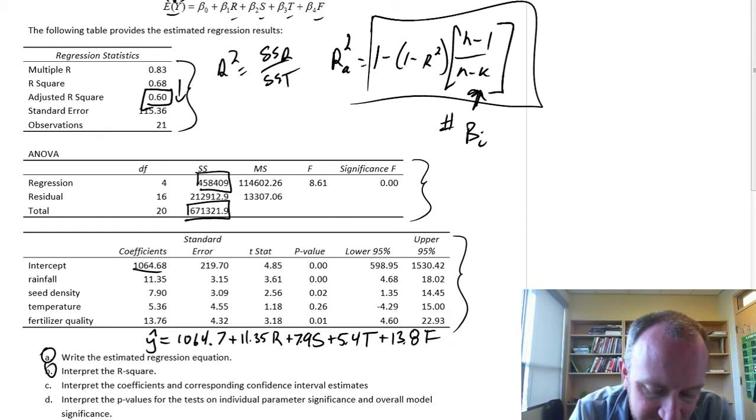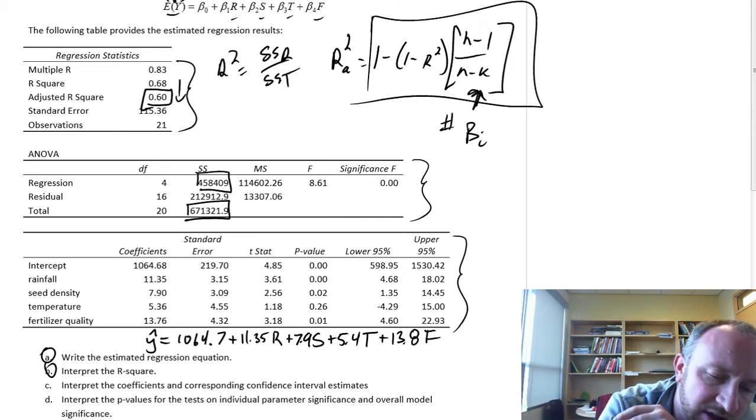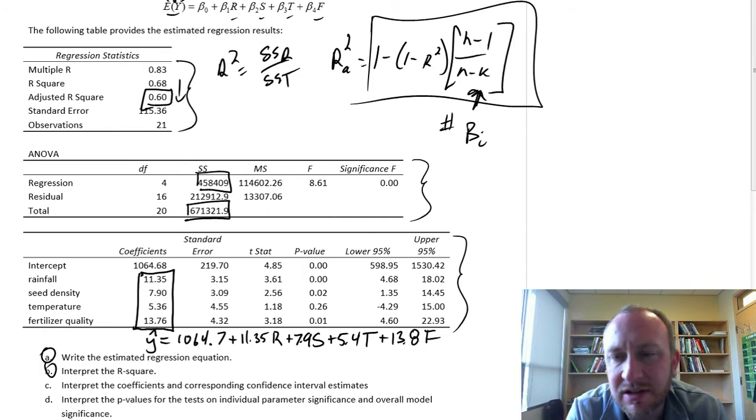Part C, interpret the coefficients and corresponding interval estimates. If we go through here, we're just going to look at our slope coefficients. Again, these are all just marginal effects.